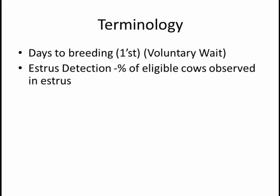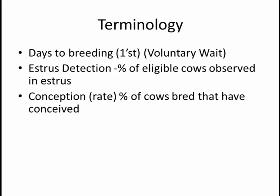Estrus detection percent is the percent of eligible cows that are observed in estrus or heat over a 21-day period of time. Conception rate is the percentage of cows that have been bred that have also conceived. So in the numerator are the number of cows that have conceived, in the denominator are the number of animals that have been bred.